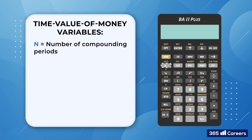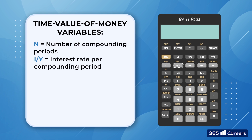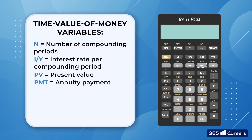N stands for the number of compounding periods. I/Y is the interest rate per compounding period. PV is the present value. PMT denotes annuity payment. And FV stands for future value.